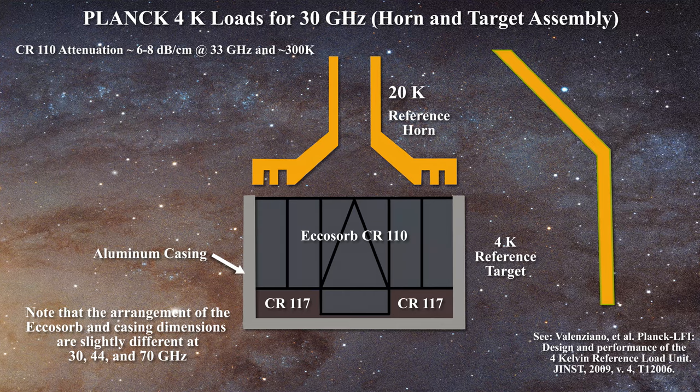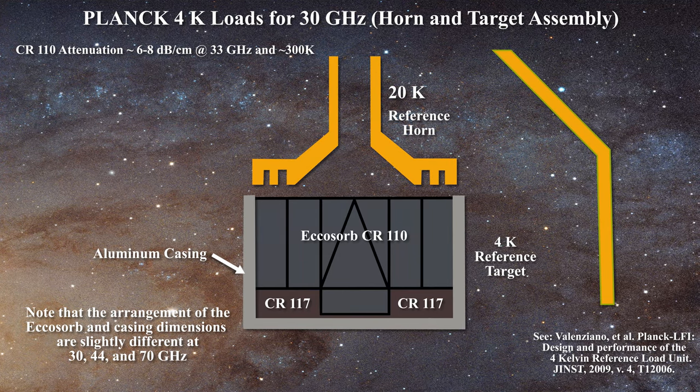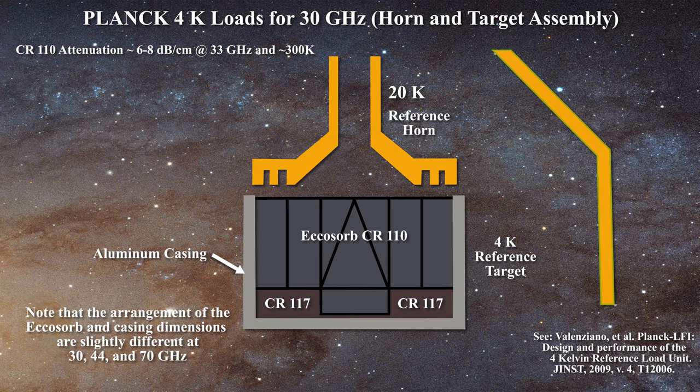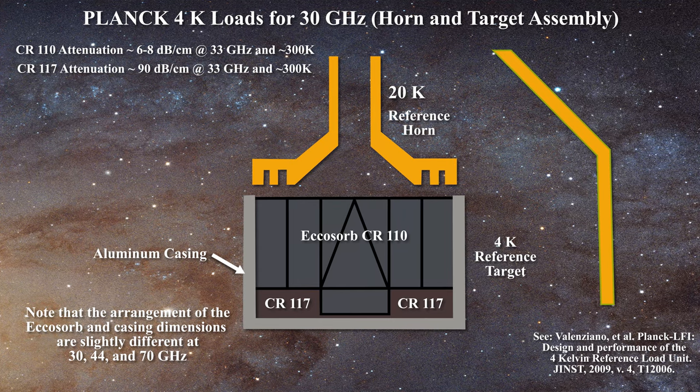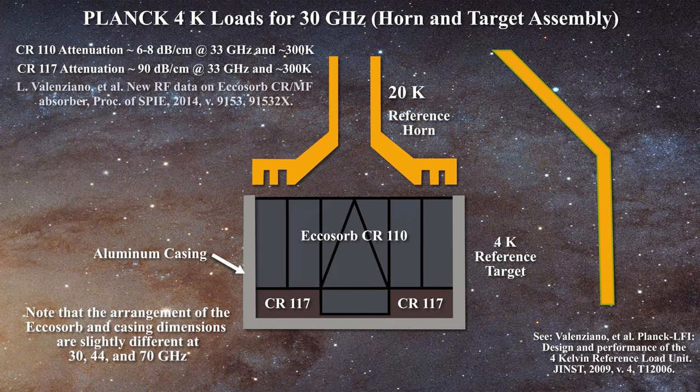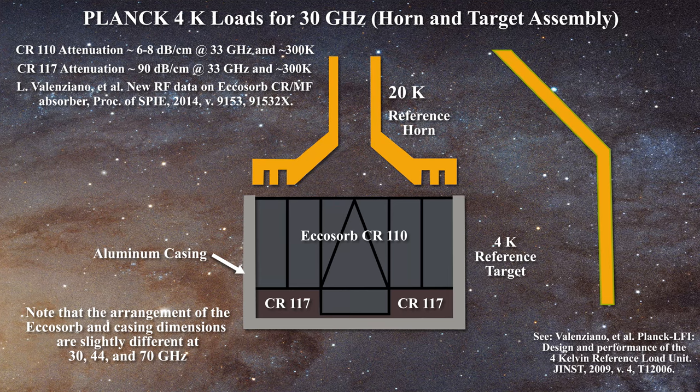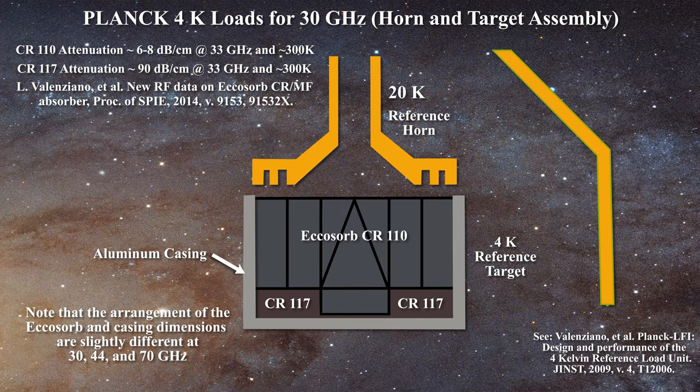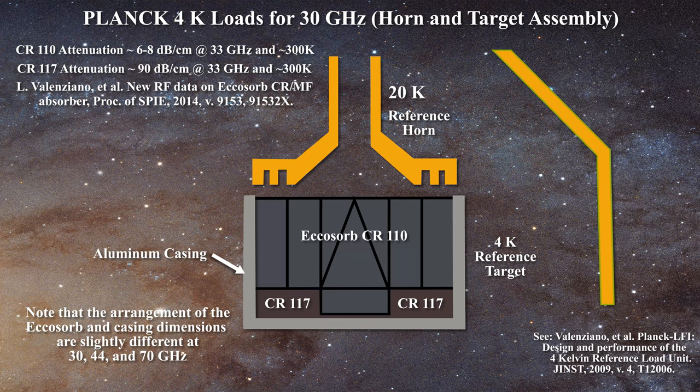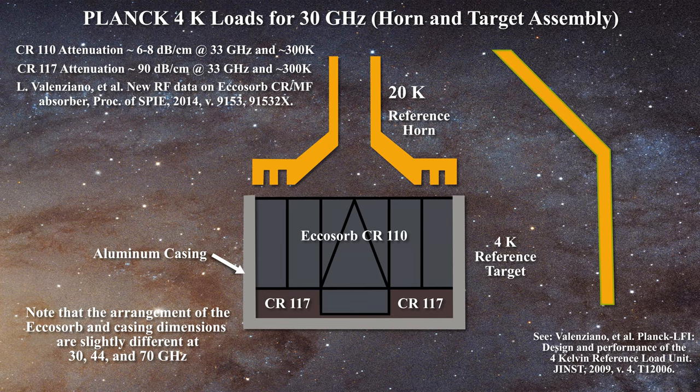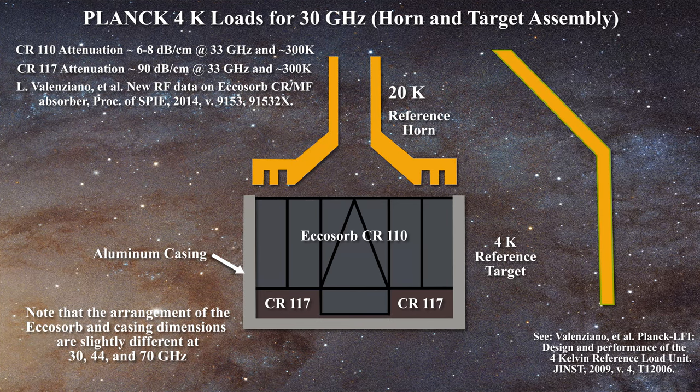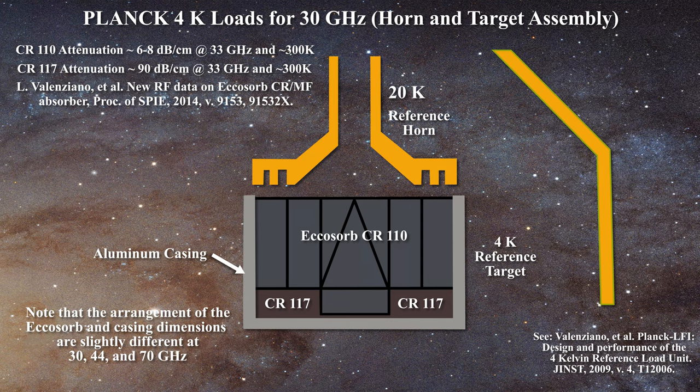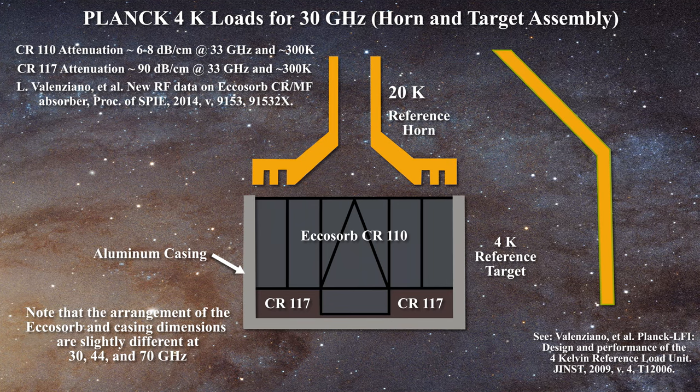Conversely, for the back of the target, the Planck team utilizes CR117 Echosorb, which has a much more powerful attenuation on the order of 90 dB per centimeter as you can learn in this recent paper. Given the thickness of material used, that should correspond to roughly a 30 dB attenuation. But again, no attenuation values are available at cryogenic temperatures. Ideally, this material should provide enough performance to act as a blackbody.